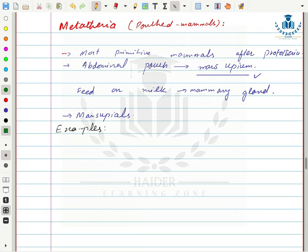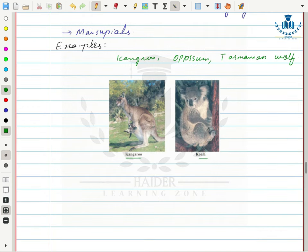Examples of Metatheria are kangaroo, opossum, and Tasmanian wolf, found in Australia and America. The kangaroo carries its young one in its pouch — the marsupium — which is clearly visible.